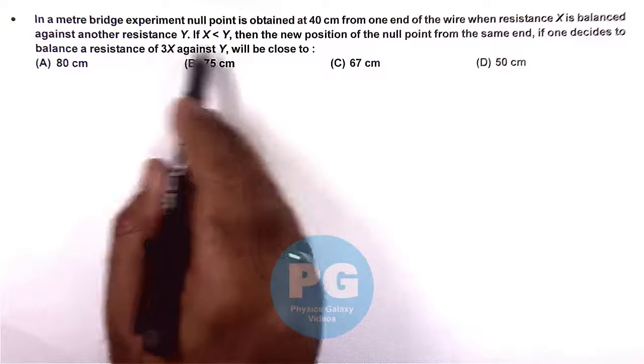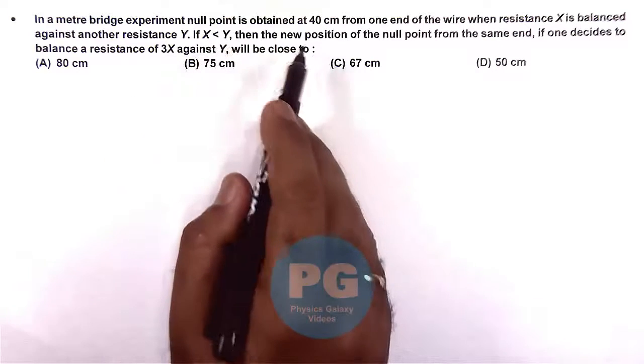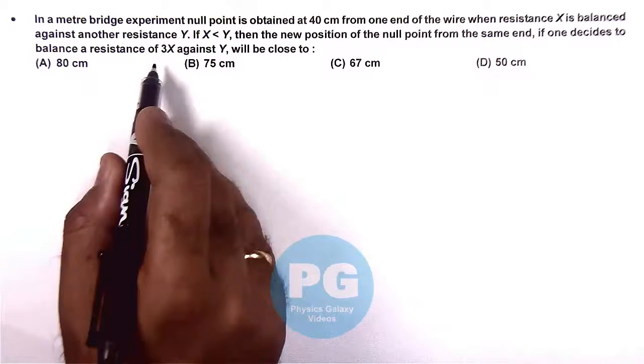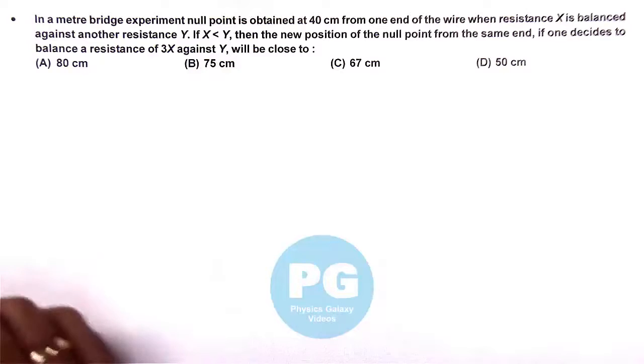And here it is saying if x is less than y, then the new position of null point from the same end if one decides to balance a resistance of 3x against y will be close to.